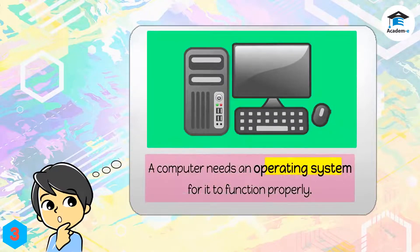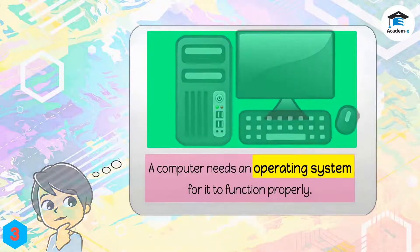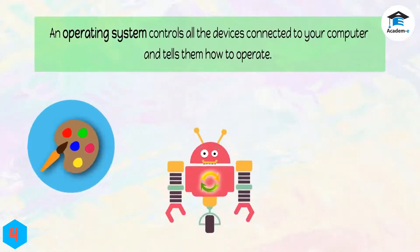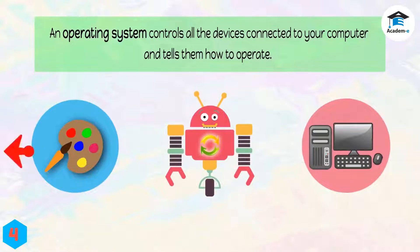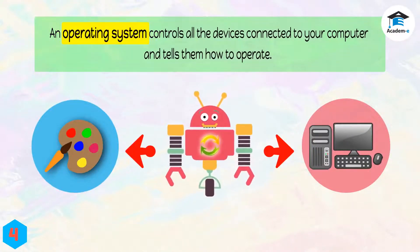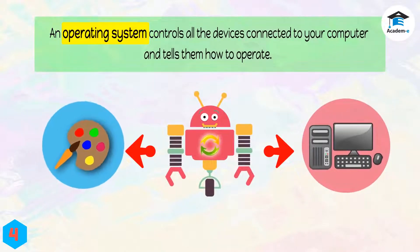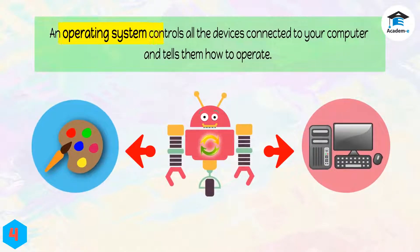A computer needs an operating system for it to function properly. In order for a computer to work, it needs an operating system. An operating system controls both the hardware and the software parts of a computer.